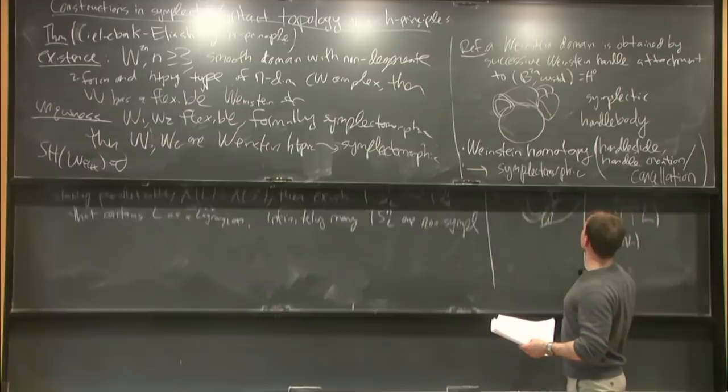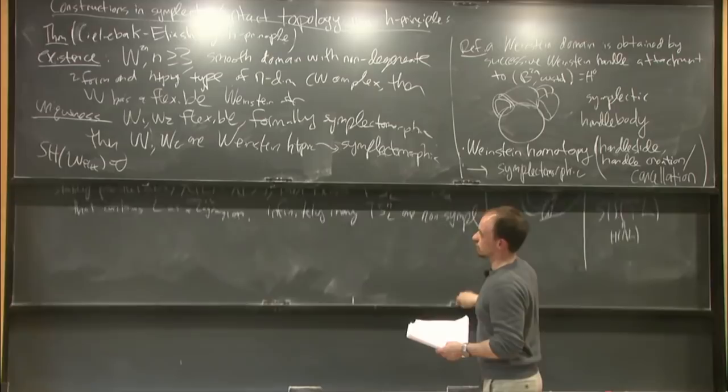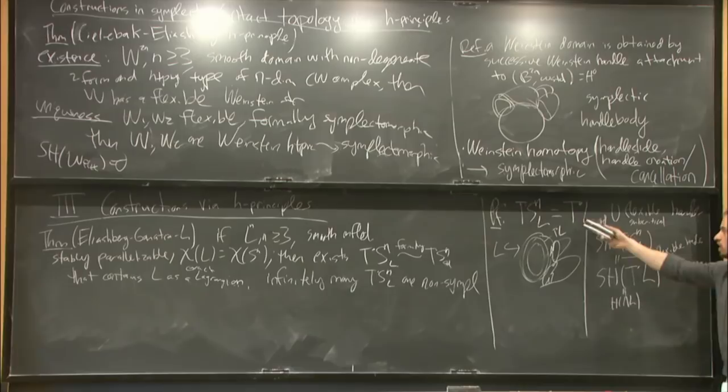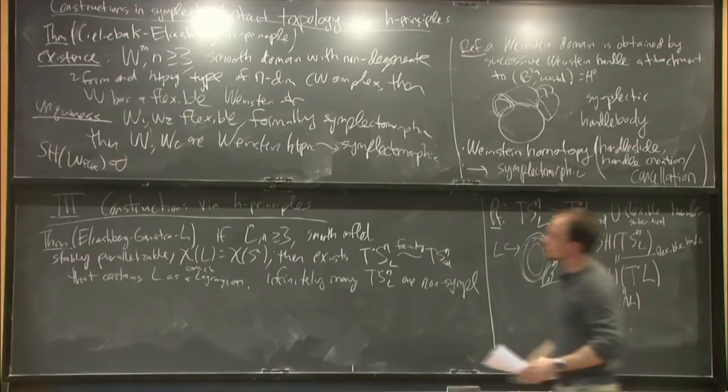That was an example of constructing exotic structures on the cotangent bundle of the sphere: for essentially any L that could be a Lagrangian for topological reasons, it is in fact realized as a Lagrangian in some potentially exotic cotangent bundle of the sphere. But this example is a little revealing in that it still seems essentially like the cotangent bundle of L with some other handles. Let me state the main results.